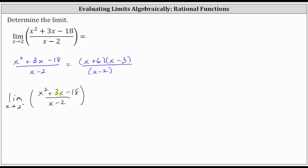Now we can use either the factored form or the original form. I'm using the original or expanded form. So as we approach two from the left, with values less than two, the numerator is going to approach the square of two, which is four, plus three times two, which is six. Four plus six is 10, minus 18.